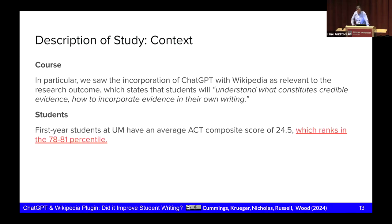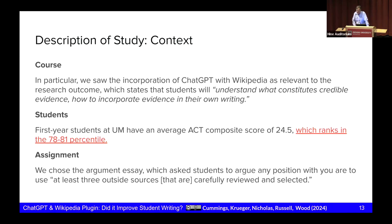A little bit about our students. First-year students at my university have an average ACT composite score of 24.5, which puts them somewhere in the 78th to 81st percentiles compared to their peers who also took the ACT. For the assignment, we chose the argument essay because it's a common assignment across most every section of first-year composition in the United States — really the backbone of what we teach. It also explicitly invited and required writers to bring in outside sources, which is where we saw the ChatGPT with Wikipedia plugin as an asset.